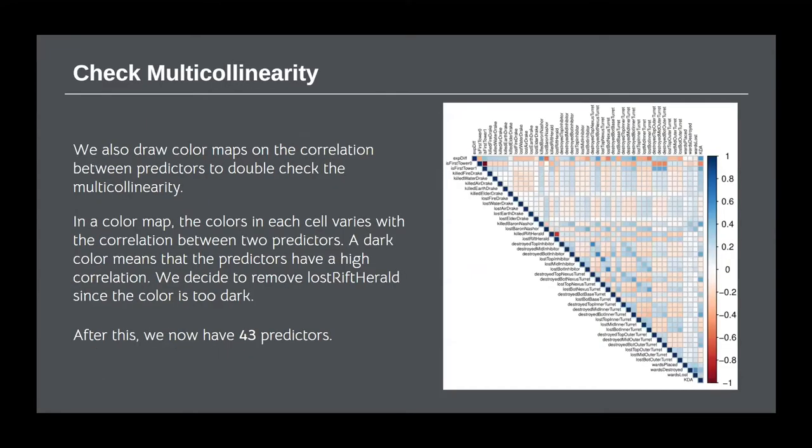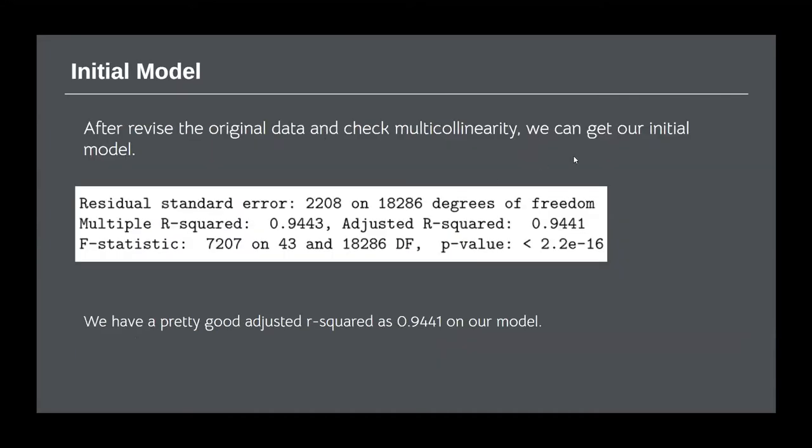Next, we draw a color map on the correlation between predictors. In a color map, the colors in each cell vary with the correlation between two predictors. A dark color means that the predictors have a high correlation. Based on that, we decide to remove lost Rift Herald. After this, we now have 43 predictors.